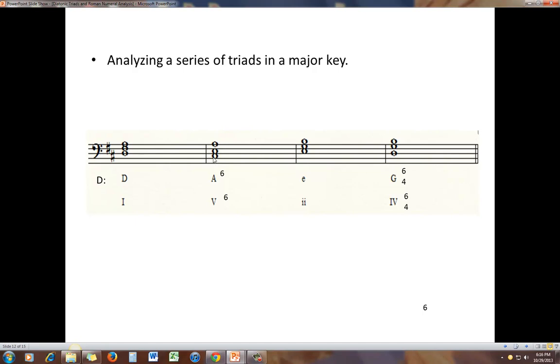A, C sharp, don't forget to use the key signature. E is an A major triad in first inversion, so a major dominant in first inversion. E, G, B is E minor. E in the key of D is the second degree, so we have a minor quality two.